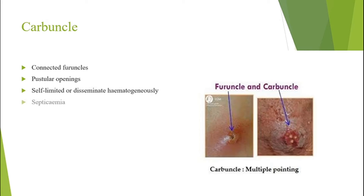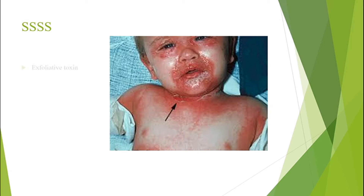Staphylococcal scalded skin syndrome — the bacteria produces an exfoliative toxin that causes the outer layers of the skin to blister and peel off, as if scalded by a hot liquid.